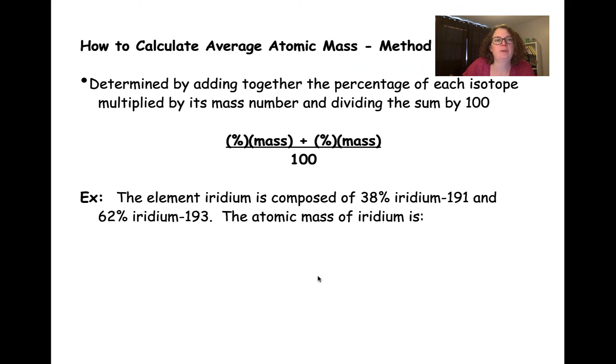There are a couple of different ways to calculate the average atomic mass that take into account the percentage of the isotope and the mass of the isotope. So for method one,